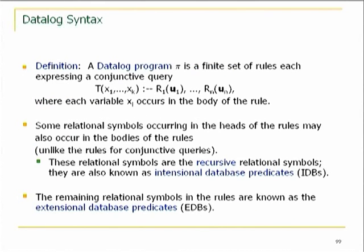What is a datalog program? It's basically a finite set of rules that express conjunctive queries. The only difference is that some names on the head may also appear in the body — and that's where recursion comes in. The ones that occur both on the left and right are called intentional database predicates or recursive predicates (IDB). The ones that occur on the right but not the left are extensional (EDB) — the given predicates in the database.